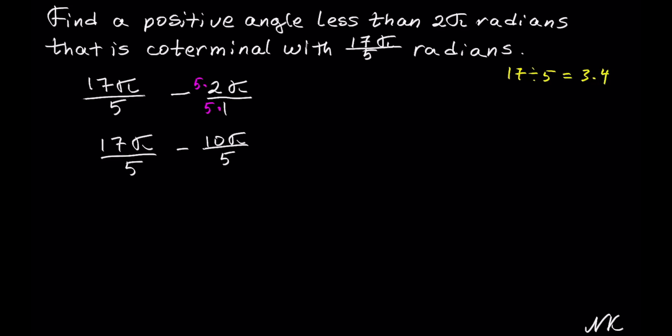We can bring this under a common denominator of 5 and have 17π minus 10π. 17 minus 10 we have 7π/5.